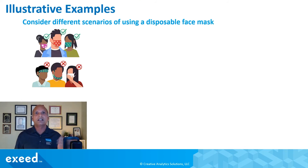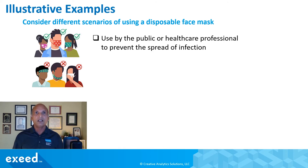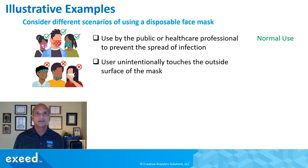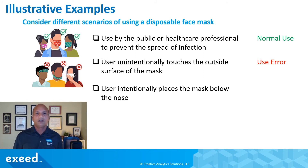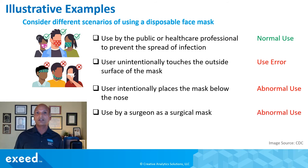Here are some examples using a face mask, very relevant for COVID-19. The purpose of a face mask is to prevent the spread of infection, so use by the public or healthcare professionals for that purpose is normal use. If a user unintentionally touches the outside surface of the mask — which can be contaminated — that's a use error; it's very normal human behavior. If a user intentionally places the mask below the nose, that's abnormal use, as we see quite frequently. And if a surgeon decides to use this mask in an operating theater, that is also abnormal use.